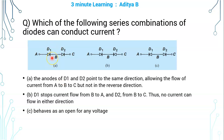Figure A conducts current from A to C if the potential at terminal A is greater than the potential at terminal C by at least two diode drops. The anodes of both D1 and D2 are facing in the same direction, and cathodes are also facing in the same direction. So current flows from A to B and B to C, meaning this series combination of diodes can conduct current from A to C.